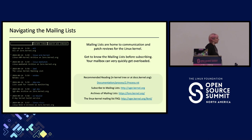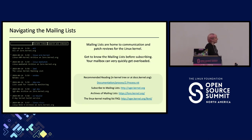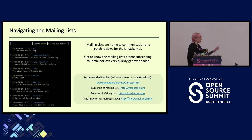Lore.kernel.org is a great place to go — it's an archive of all the mailing lists online, a great way to check in without getting flooded yourself. If you go to that page you will see there is a much longer list than what's shown here. There is a mailing list for every subsystem, and there's also a kernel newbies mailing list. This is where all communication and patches go for review, acceptance, and merging.